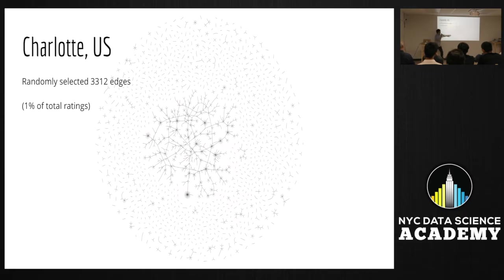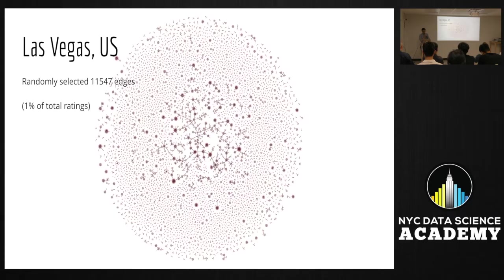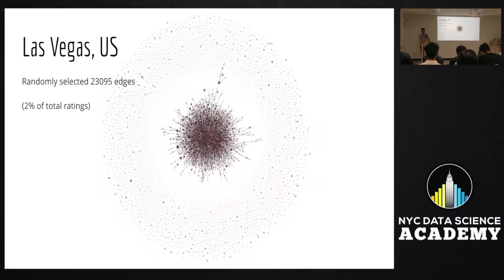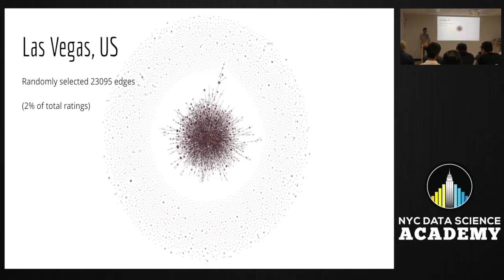If a business has hundreds of users who rated it, you will see something like this. This is Las Vegas — we only randomly chose 1% of the whole ratings. If we choose 2%, we will see it differently. You can generate a lot of value from this graph — extract connected components, extract the PageRank, do community discovery, do k-means clustering. Here are the cities of Phoenix and Pittsburgh as well.